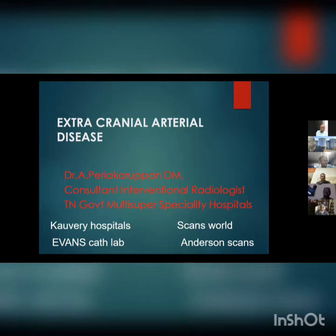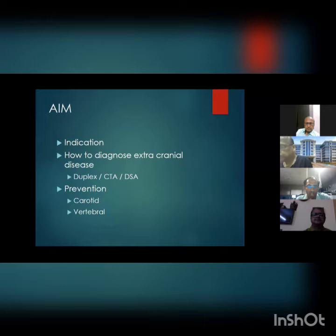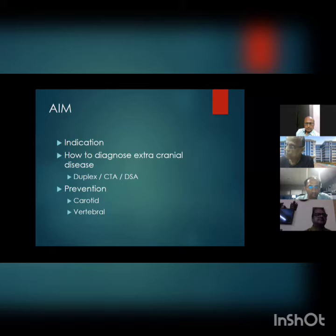I'll be brief and show only case scenarios. The aim of this presentation is to cover extracranial arterial disease management — anterior circulation involving the carotid and posterior involving the vertebral — and how to plan these interventions. The main aim is how to diagnose extracranial disease. Though we are in the era of stroke treatment with thrombolysis and thrombectomy, the aim should be prevention of any neurological event.